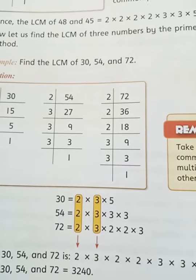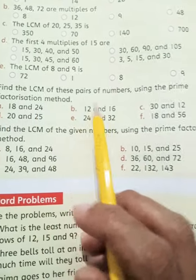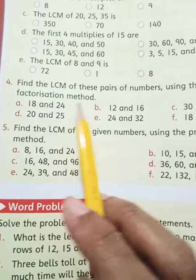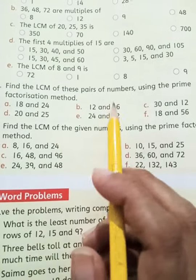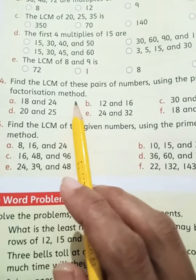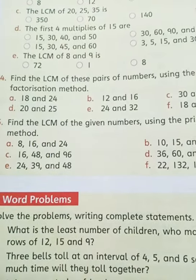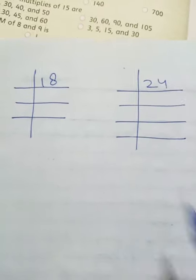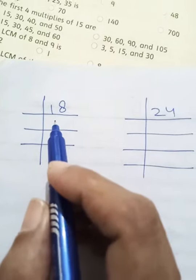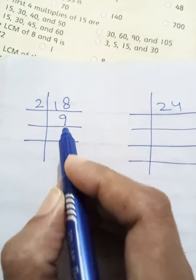Now come to page number 46. On page number 46, question number 4: find the LCM of these pairs of numbers using the prime factorization method. Part A: 18 and 24. 18 even number है, 2 से start करेंगे — 2 nines are 18.